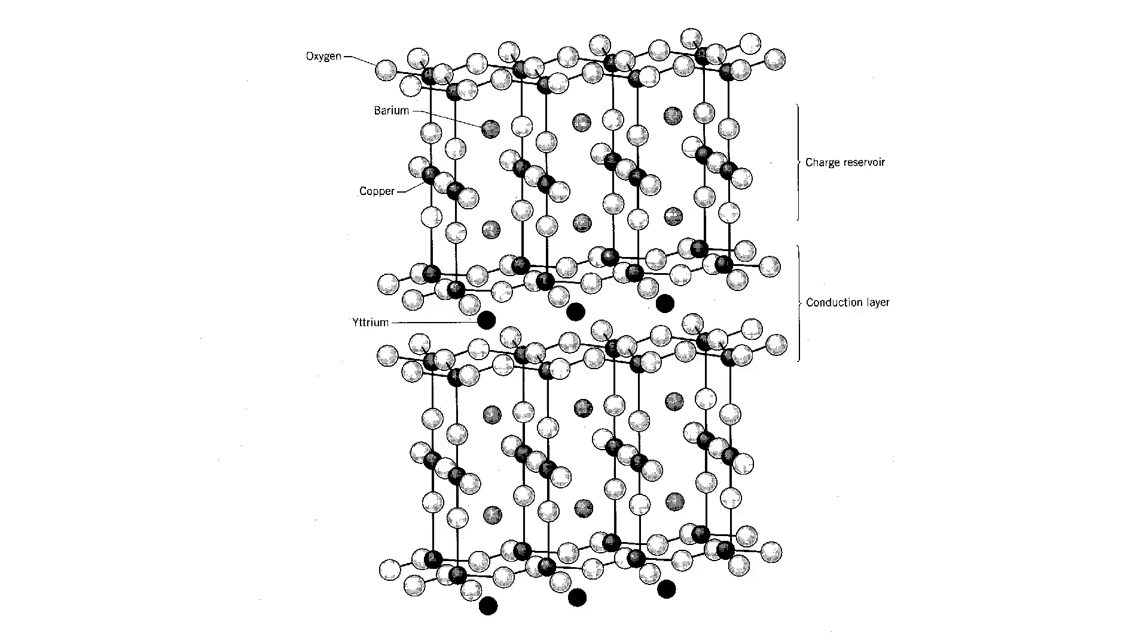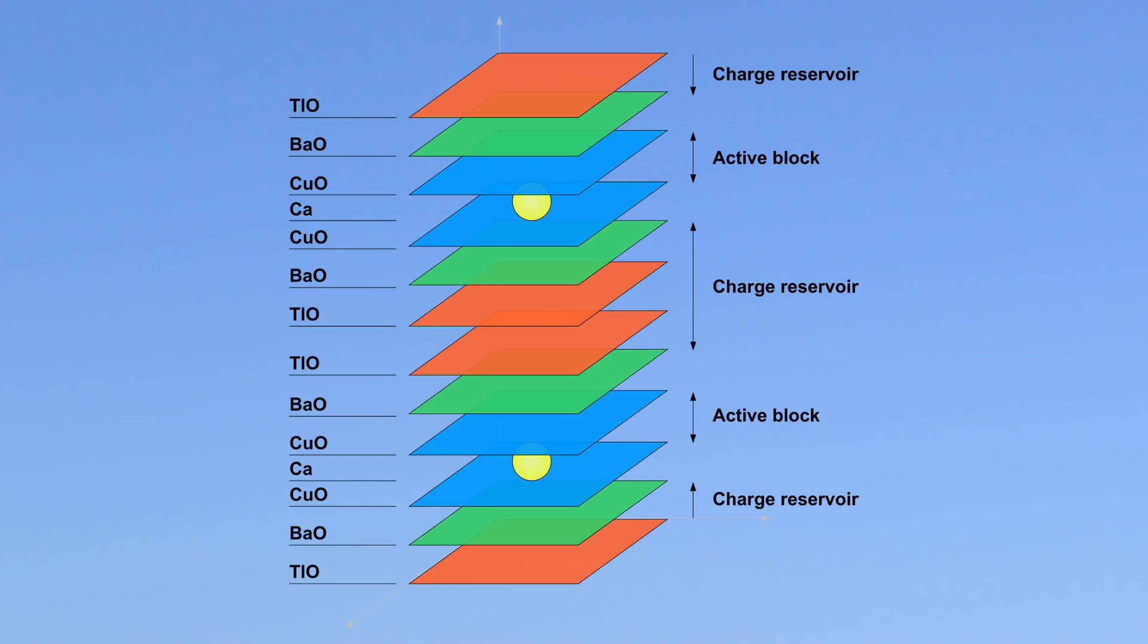More layers of conducting molecules leads to higher critical temperature, however, this effect has quickly diminishing and eventually decreasing returns. The highest critical temperature in the cuprate families is currently achieved with three layers of cuprate with doping.